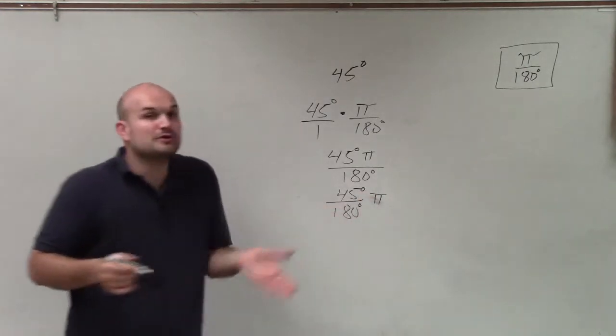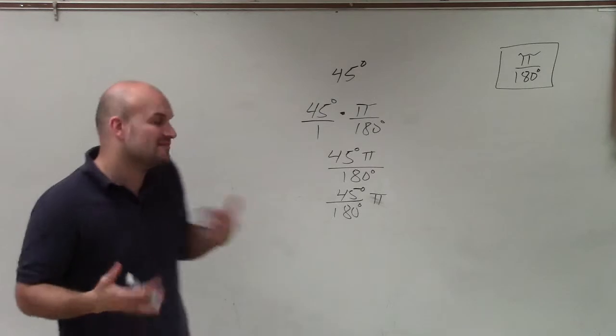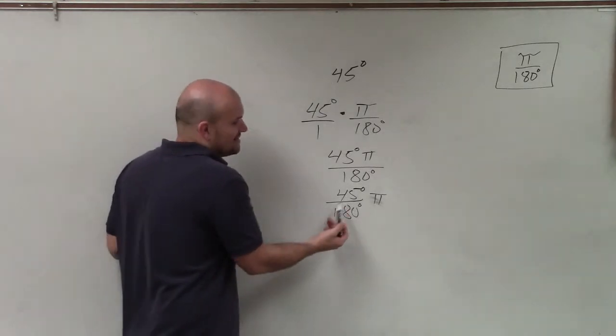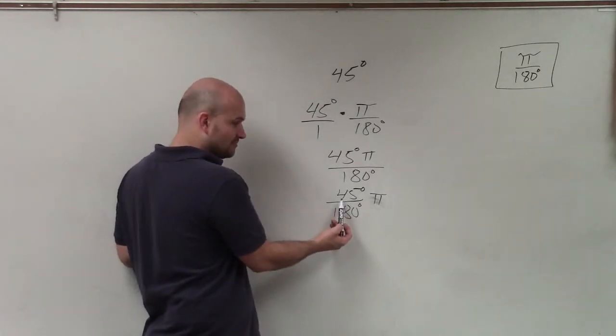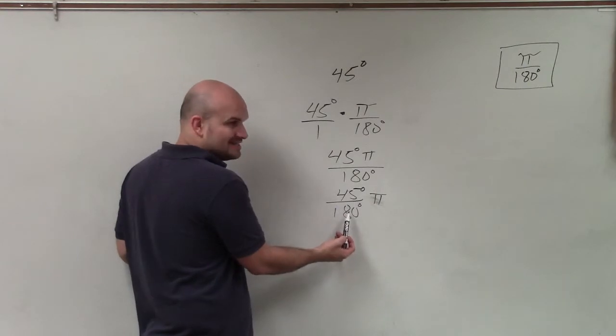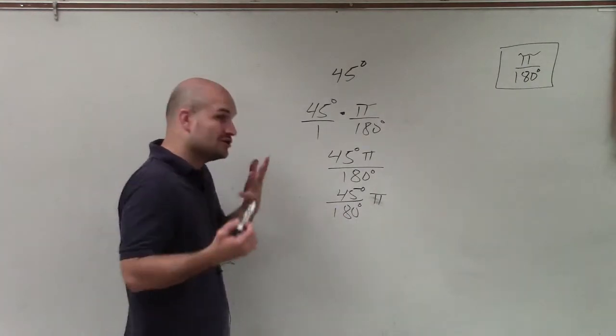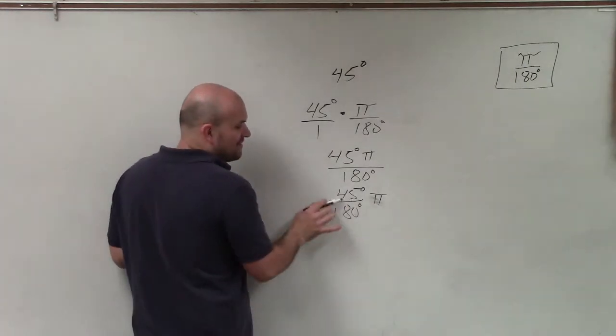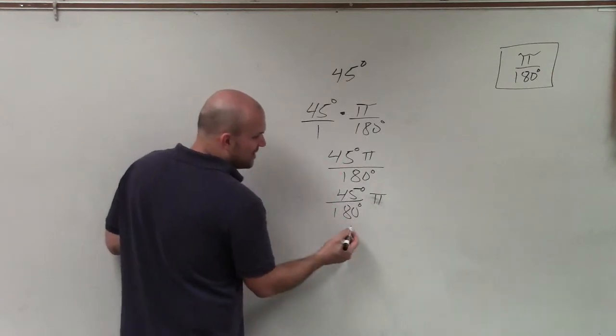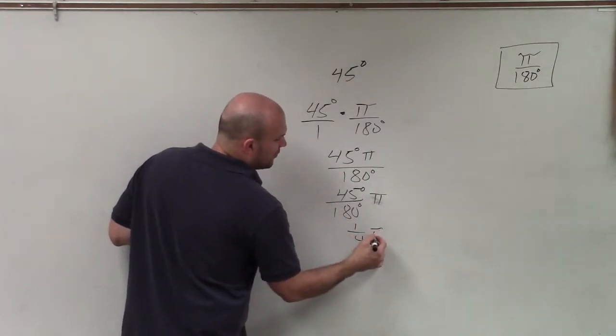And now I need to see how can I reduce 45 over 180? And kind of think of, well, does 45 divide into 180? And yes, it does. It actually goes in there four times. And 45 goes into 45 one time. So I can reduce this to 1 fourth times pi.